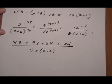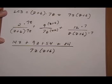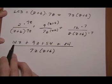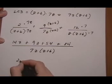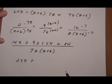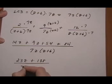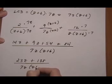And now we want to combine like terms, factor and cancel to get in lowest terms. So 14 and 9 gives us 23Z. 54 and 84 will give us 138, all over 7Z times Z plus 6.